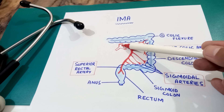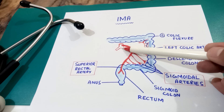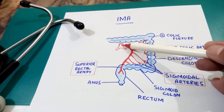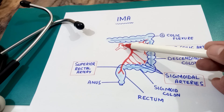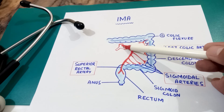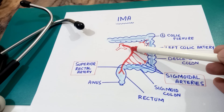It originates 3 to 4 centimeters above the bifurcation of the abdominal aorta — as you know, the abdominal aorta divides into the right and left common iliac arteries. So 3 to 4 centimeters above this bifurcation is the origin of the inferior mesenteric artery at the level of L3. This artery then descends behind the third part of the duodenum.